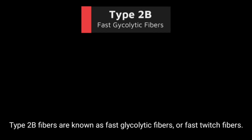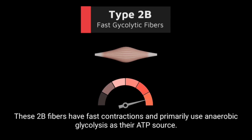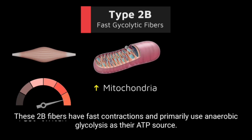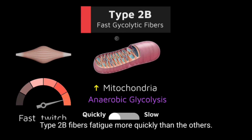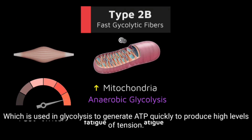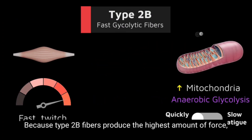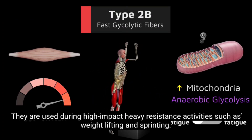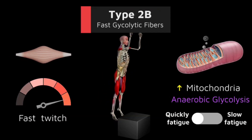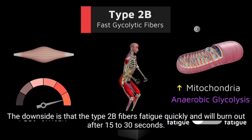Type 2b fibers are known as fast glycolytic fibers or fast twitch fibers. These 2b fibers have fast contractions and primarily use anaerobic glycolysis as their ATP source. Type 2b fibers fatigue more quickly than the others. They have a large diameter and possess high amounts of glycogen, which is used in glycolysis to generate ATP quickly to produce high levels of tension. Because type 2b fibers produce the highest amount of force, they are used during high impact heavy resistance activities such as weight lifting and sprinting. The downside is that type 2b fibers fatigue quickly and will burn out after 15 to 30 seconds.